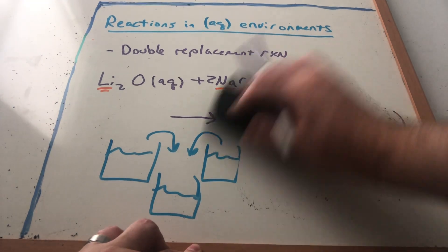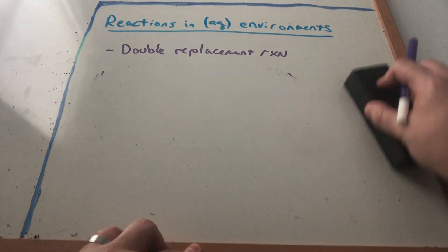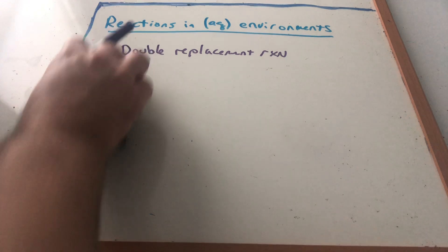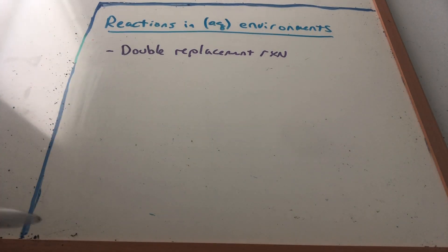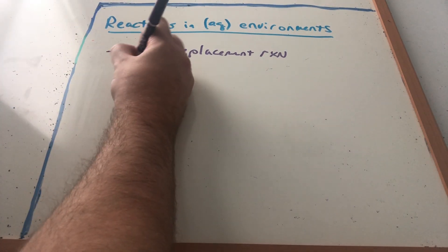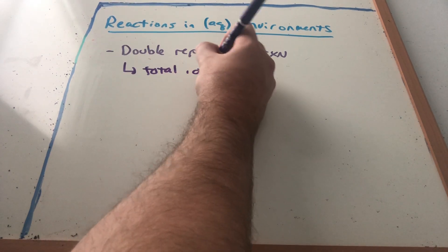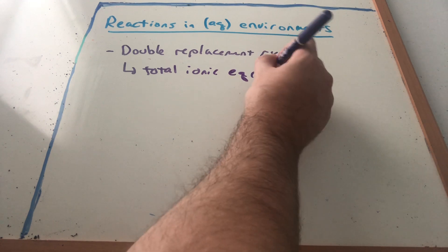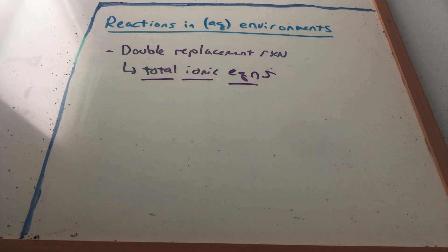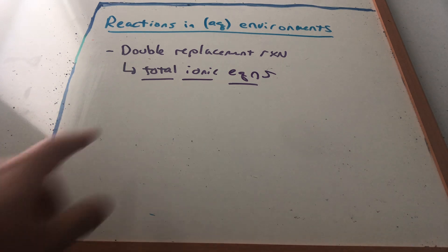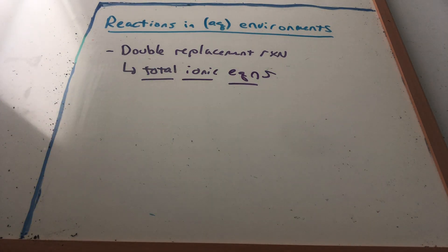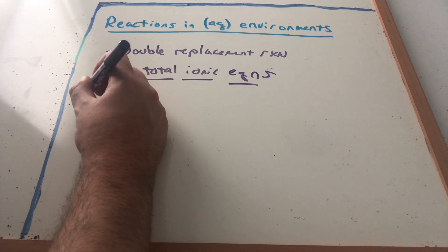Along those lines, we write what are known as total ionic equations and net ionic equations. These ionic equations help us see the actual chemistry. We know that aqueous really means not attached anymore. To make a total ionic equation, we write all the aqueous species in their ion form.